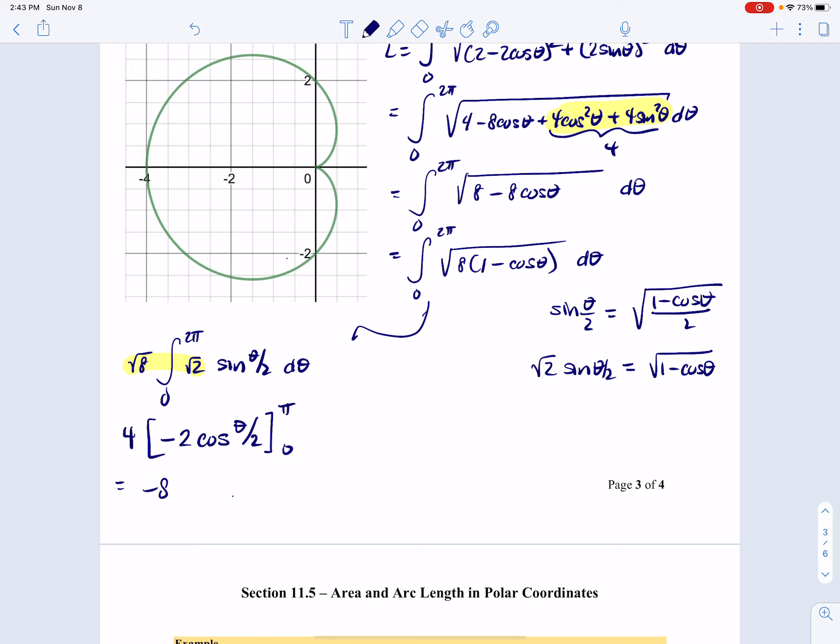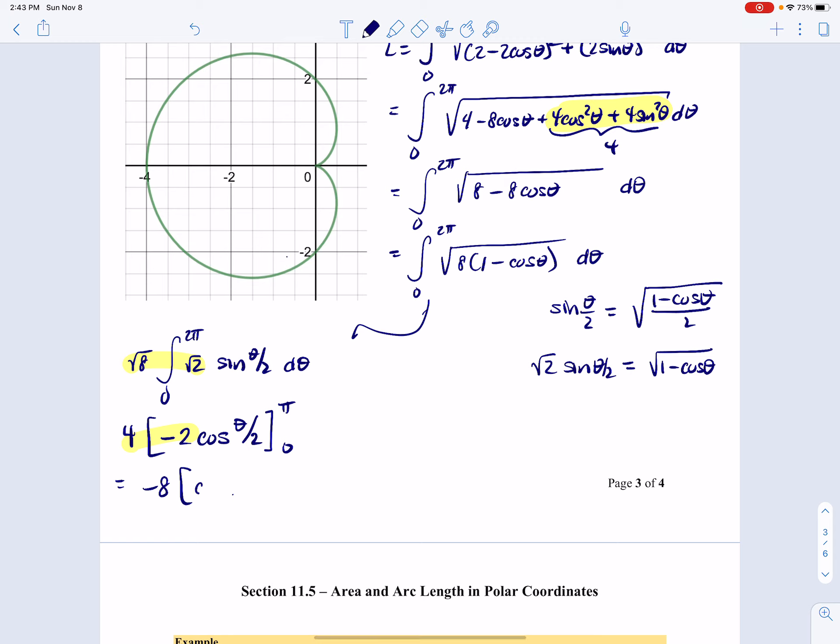So then we have negative 8, bringing these two together. Cosine of pi over 2 minus cosine of, I'm sorry, that's 2 pi. So that's cosine of pi,